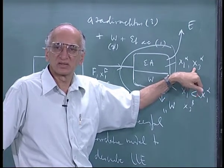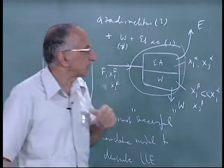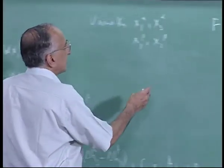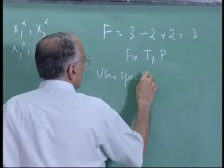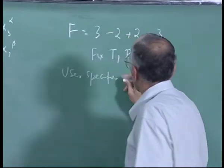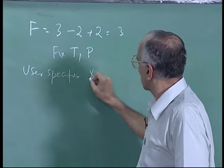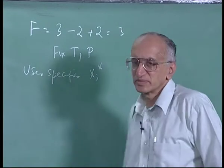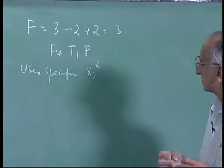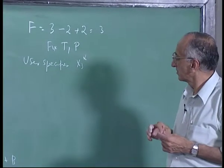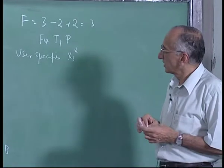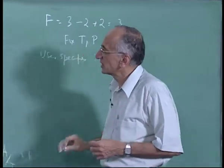So this is really a specific designer specification the user will say I want azadirachtin in ethyl acetate at such and such a concentration. So I will say normally user specifies, this is also user specified but user specifies x3 alpha in particular.